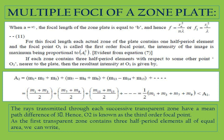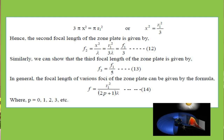In this manner, a zone plate has a large number of foci, which can be given by the expression F = R1²/((2P+1)·lambda), where P equals 0, 1, 2, 3, and so on. So we get multiple focal points corresponding to odd numbers of half period zones.